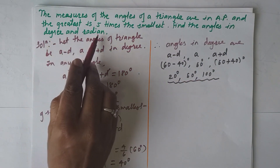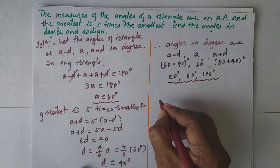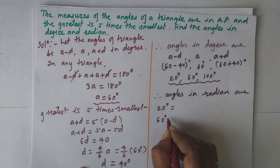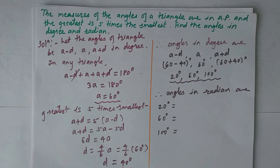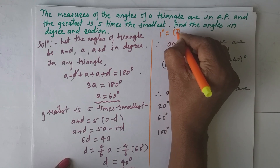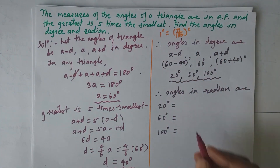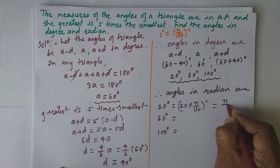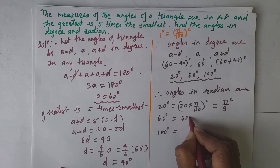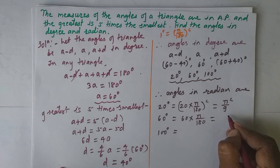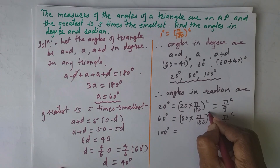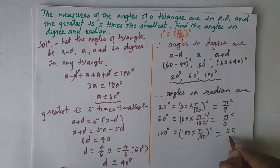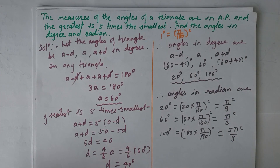Now we convert to radian measure. Using 1° = π/180 radians: 20° × π/180 = π/9 radians; 60° × π/180 = π/3 radians; and 100° × π/180 = 5π/9 radians. So the angles in radian measure are π/9, π/3, and 5π/9.